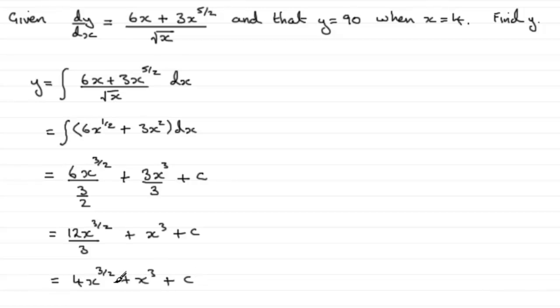So this is what y equals, but we've got this constant of integration, and we've got to work out what that is. And that's the reason behind giving these values. When y equals 90, x is 4. And we can use those then to find out c by substituting these into our equation here.